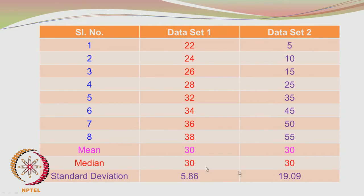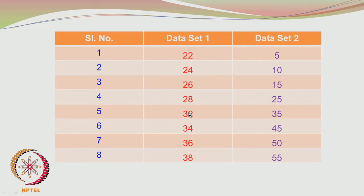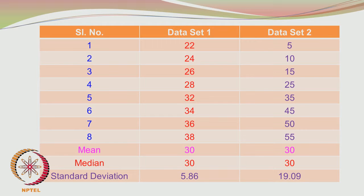The median value is also 30 for both classes. To find the median, you arrange the data in ascending order — already done — and with an even number of data points, 2m = 8, so m = 4. You find the 4th and 5th data points. In set 1, the average of 28 and 32 is 60/2 = 30. In set 2, the average of 25 and 35 is also 30. So both data sets have the same mean and the same median.